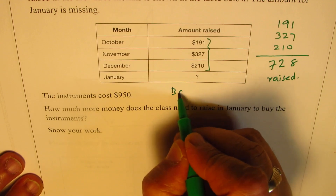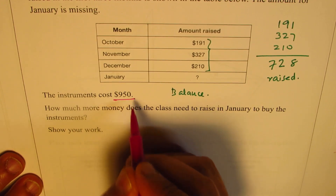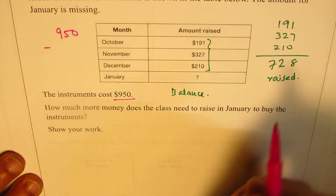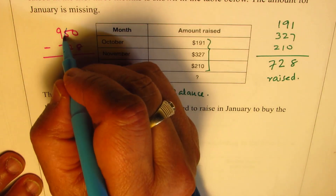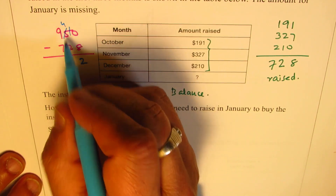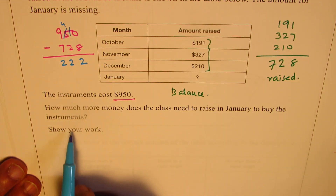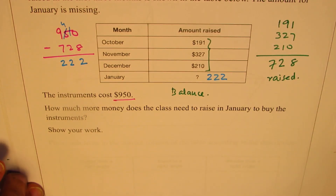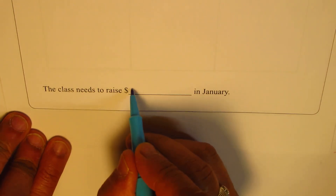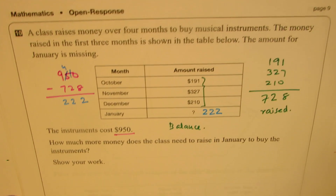So what is the balance? We have $950 to make, so we take away $728. We borrow to do the subtraction: 10 minus 8 is 2, then 4 minus 2 is 2, and 9 minus 7 is 2. So we need to raise $222 in January. That becomes our answer — the class needs to raise $222 in January. That is how you could answer this question.